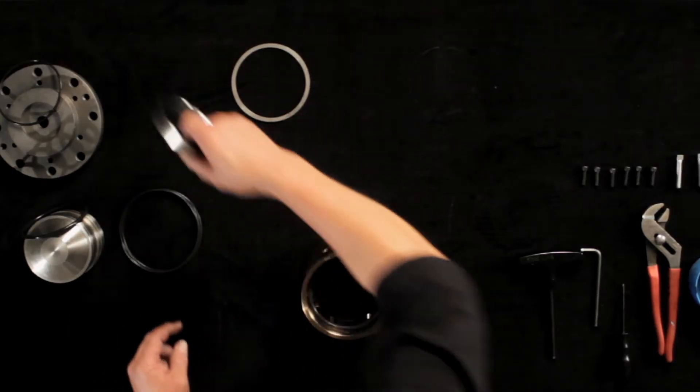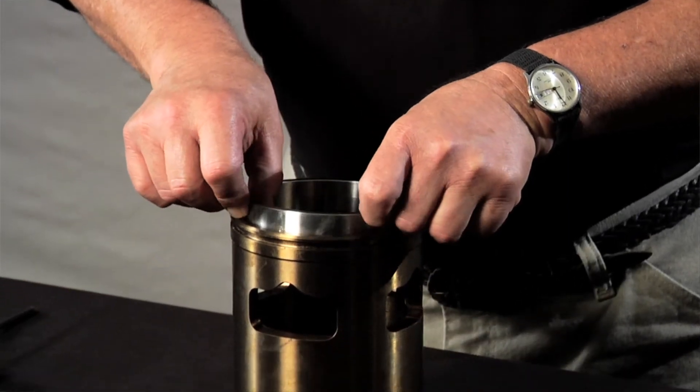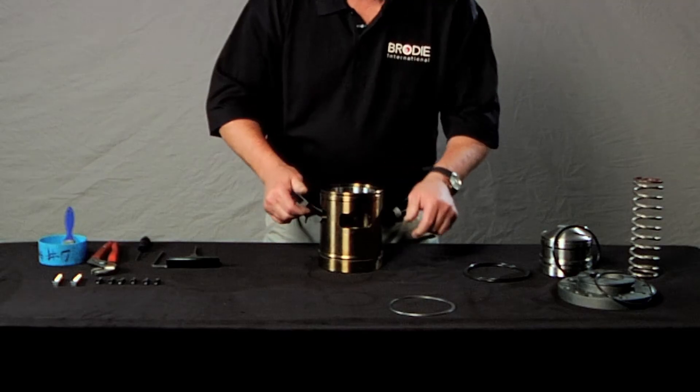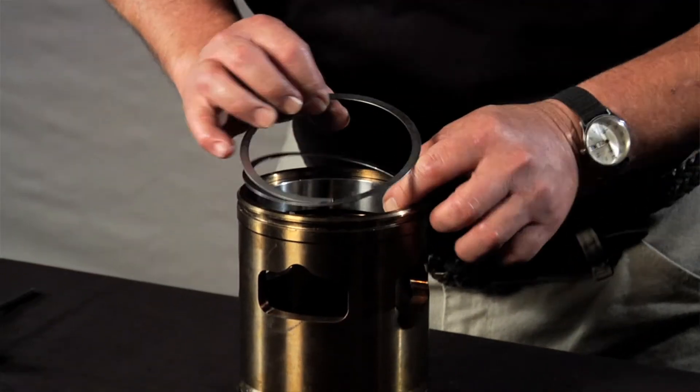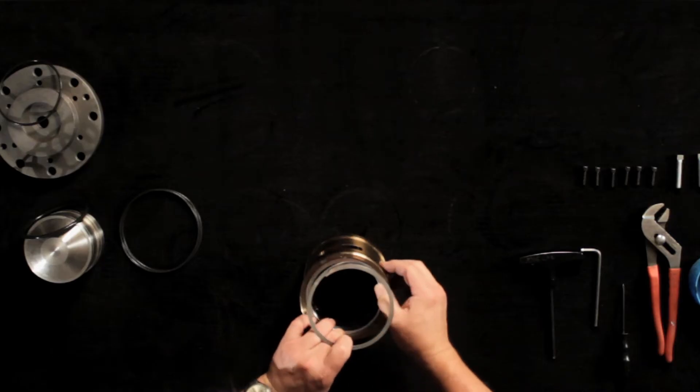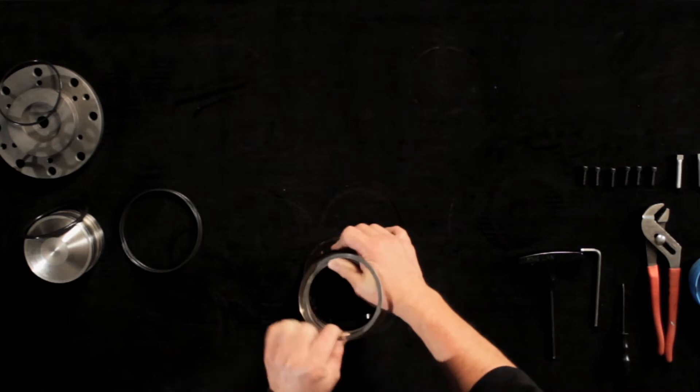Insert the seal ring into the cylinder against the elastomer. Install the retaining ring over the seal ring. This process can be challenging. It's important to get the retaining ring seated in the groove.